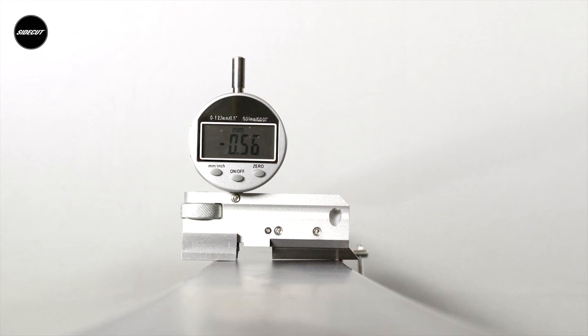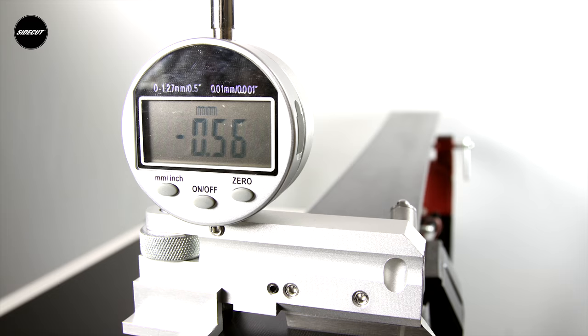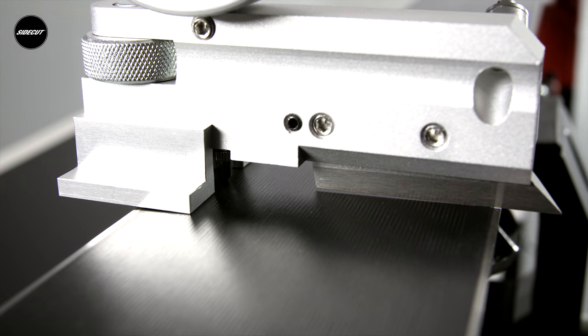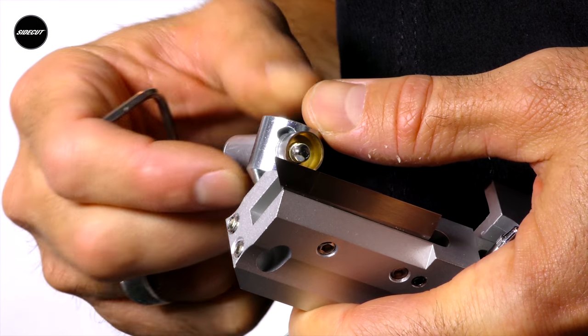This is a precision base bevel meter accurate to 0.01 degrees. It's a great way to validate the work done on your base edges. It gives you important insight into understanding how a very small change in base bevel affects your ski's feel on the snow.